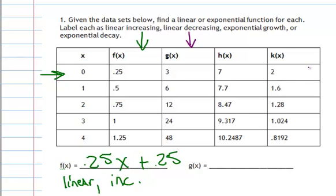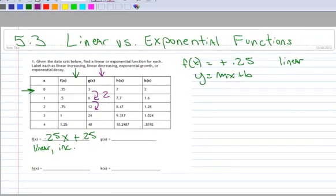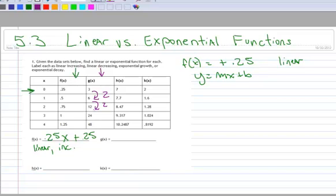But let's see if we can examine the exponential and how it grows. So 3, when I go from 3 to 6, it looks like I'm doubling. And when I go from 6 to 12, well, that's another double. And 12 to 24 is another double. So it looks like this is doubling.